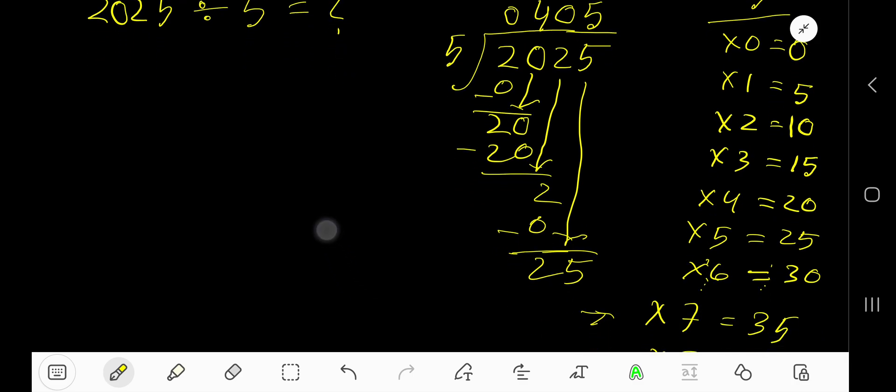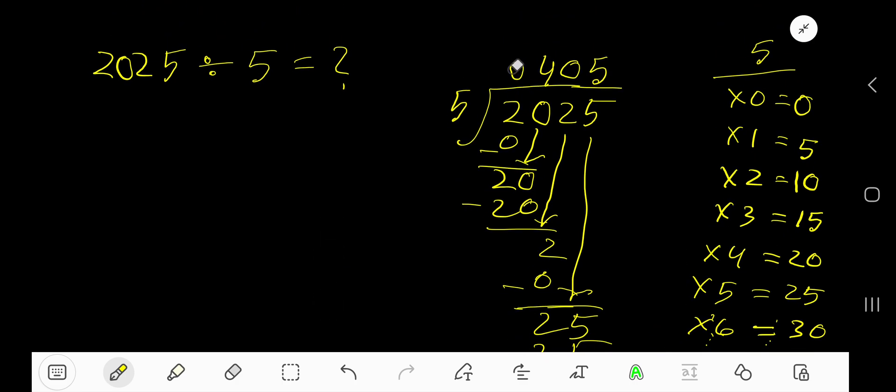5 times 5 is 25. Subtract to get 0. Since our remainder is 0, we are done. The answer is 0, 4, 0, 5, which means 405 is our answer.